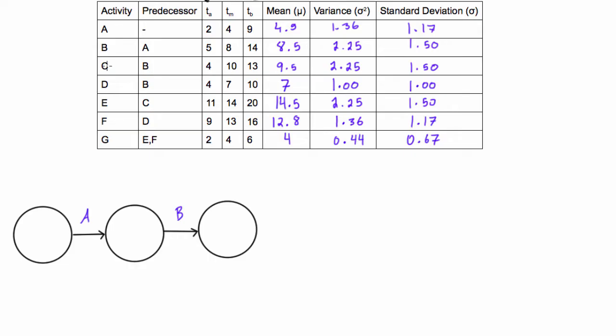Next up, we can see that activity C and activity D both depend on B, so we'll have an arrow coming up and an arrow coming down. Then we can see that activity E depends on C, so we'll have an arrow coming off of C, and then activity F depends on D, so we'll have another arrow coming off of D. But we can see that G depends on E and F, so these will both have to come down into one node.